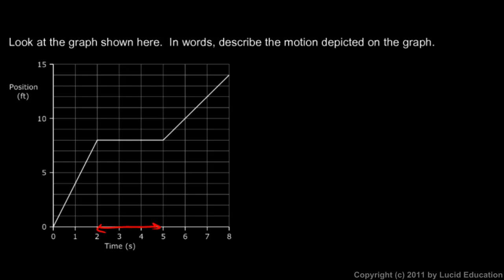Then during the time interval from two to five seconds, its position did not change — it just stayed right there the entire time. Notice: time is moving forward but position is not changing, meaning it sat still for three seconds. Then it moved forward again over the next three seconds from five to eight.